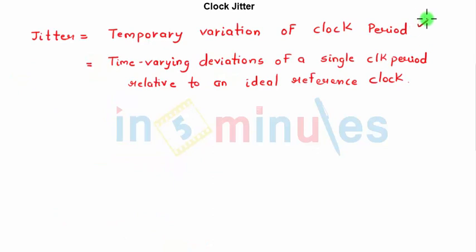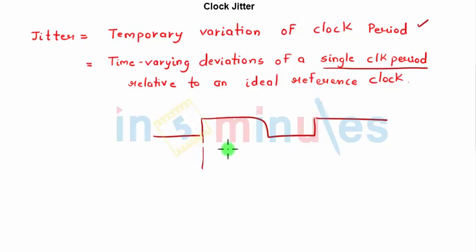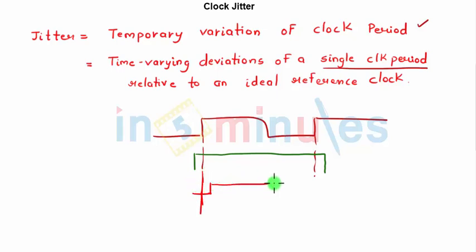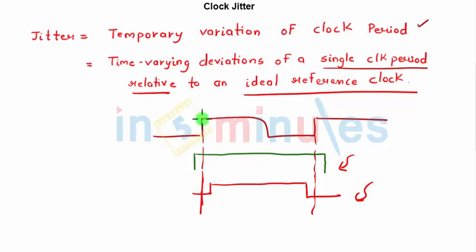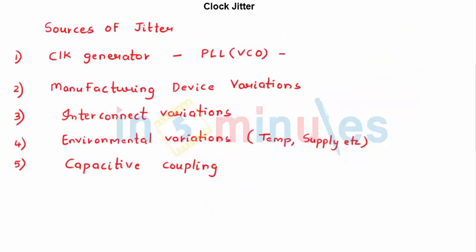This temporary variation of the clock period is clock jitter. We can also define it as the time-varying deviation of a single clock period relative to an ideal reference clock. The clock ideally arrives at a fixed time, but it can come earlier or later in various combinations. So clock jitter is the time-varying deviation of a single clock period relative to an ideal reference clock.